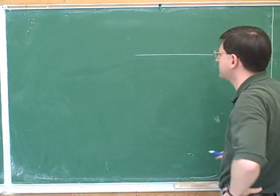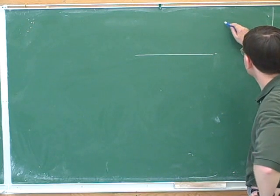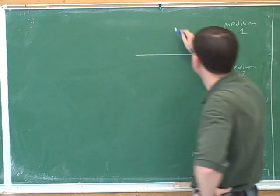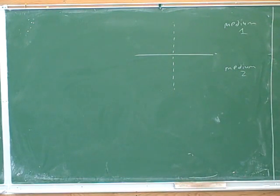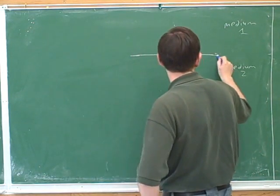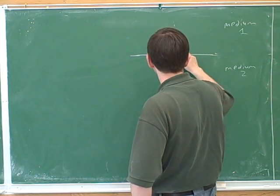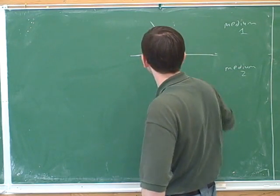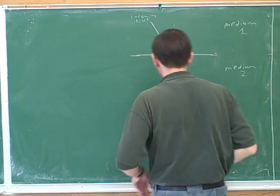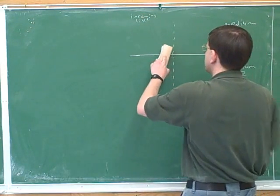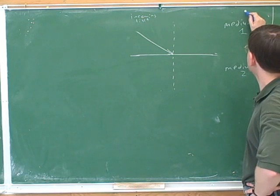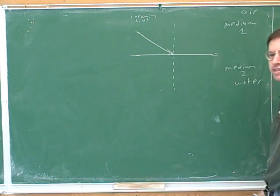Reflection and refraction have to do with light passing through a surface between one medium and another medium. We might call this medium one and this medium two. To be concrete, we might say the first medium was air and the second medium was water, but there could be any two different substances that the light could travel through.